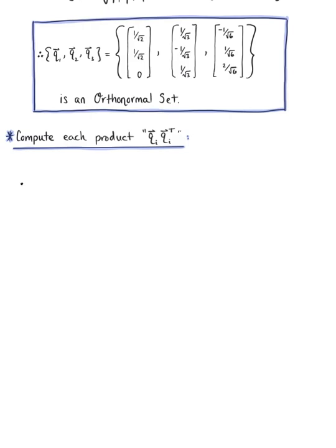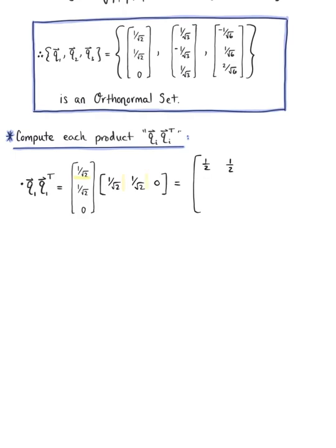The first product is vector q sub 1 multiplied by the transpose of vector q sub 1. Using the row-column rule for matrix multiplication with components 1 over root 2, 1 over root 2, 0, we get the matrix: first row [1/2, 1/2, 0], second row [1/2, 1/2, 0], third row [0, 0, 0].